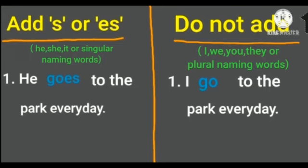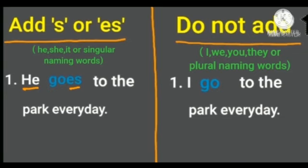Look at these two columns. First example — He goes to the park every day. This sentence has the word he, so we need to add es to the action word. Next column — I go to the park every day. This sentence has the word I, so we should not add s or es to the action word.